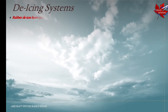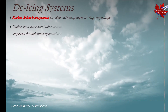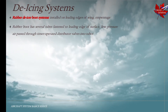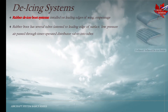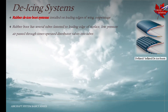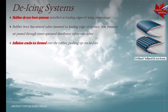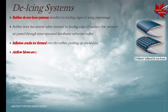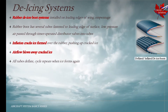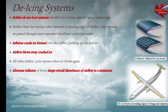We shall discuss de-icing systems next. Rubber de-icer boot systems are installed on leading edges of wings and empennage. The rubber boot has several tubes fastened to the leading edge of the surface. Low pressure air is passed through timer-operated distributor valves into the tubes. Inflation of the boots cracks the ice formed over the rubber, pushing up the cracked ice which is blown away by the airflow. All tubes then deflate and the cycle repeats when ice forms again. Alternate inflation of the boots keeps overall disturbance of airflow to a minimum.